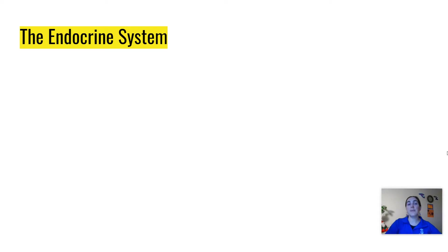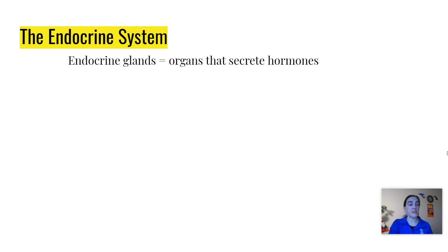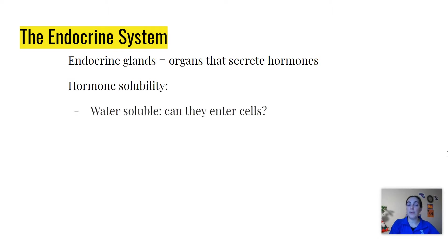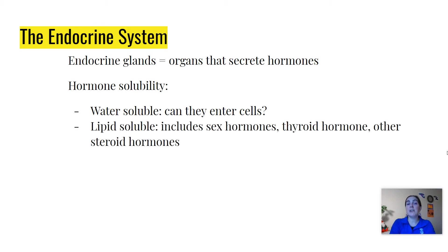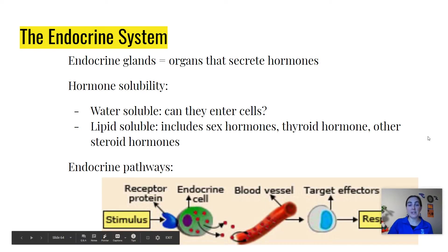The endocrine system has to do with your hormones and the signals that are sent throughout living things to control a whole bunch of different physiological responses. An endocrine gland is a part of your body that secretes hormones. Depending on the type of hormone, hormones that are water soluble — meaning hydrophilic — can't easily pass through the cell membrane, so they tend to bond to transmembrane receptors on the outside of the cell membrane. But there are also hormones that are lipid soluble and can move through the membrane, including the sex hormones, thyroid hormone, and other types of steroid hormones. These hormones act as signaling molecules in endocrine pathways.